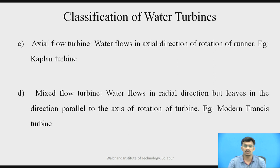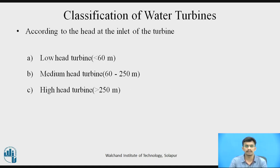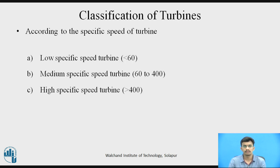According to head at the inlet, turbines are classified as low head (less than 60 meters), medium head (60 to 250 meters), and high head (above 250 meters). Turbines are also classified by specific speed: low specific speed turbines rotate at less than 60 RPM, medium specific speed turbines rotate between 60 to 400 RPM, and high specific speed turbines rotate at greater than 400 RPM.